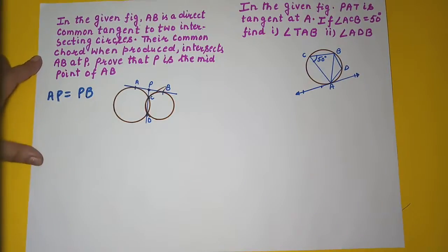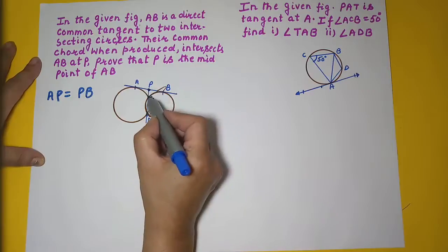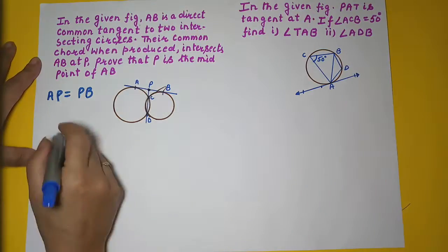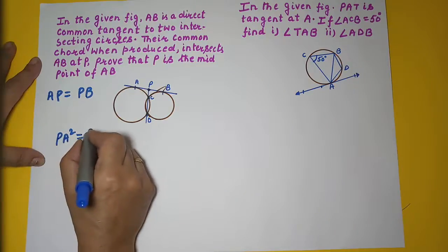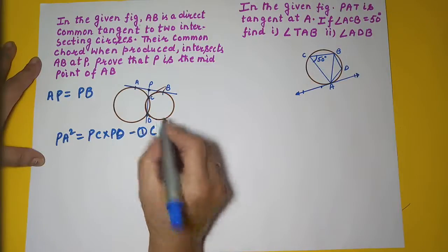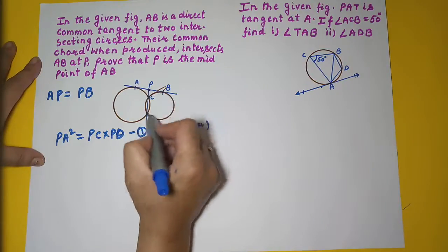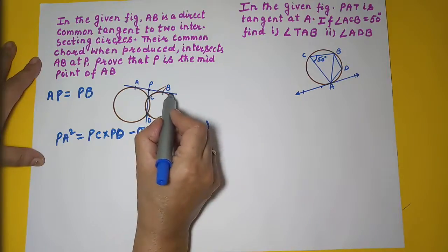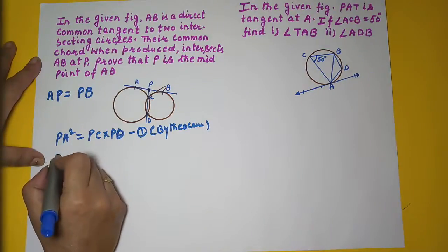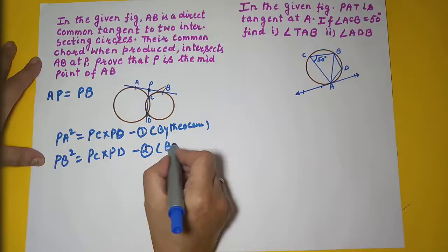Taking the bigger circle: CD is a chord extended to P, and PA is the tangent. By theorem, PA² = PC × PD. This is equation one. Now for the smaller circle: PB is the tangent and CD is the chord extended to P. By the same theorem, PB² = PC × PD. This is equation two.